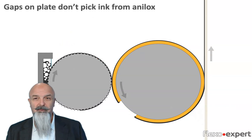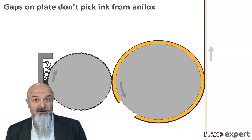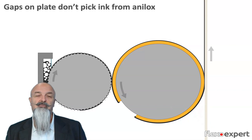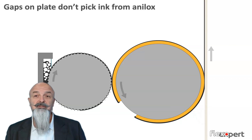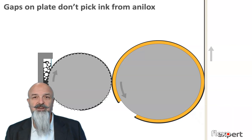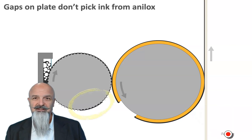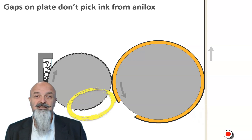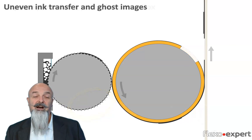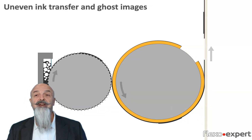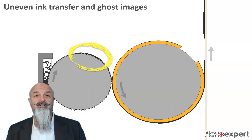Let's not forget that normally we are not printing full solids — we have both printing and non-printing areas on the plate. Therefore, in correspondence with a plate non-printing area, the anilox will not discharge any ink to the plate. So it will return inside the ink chamber with some cells that are still full, or almost full. Out of the metering blade, we could then have areas on the anilox roll with a different quantity of ink in the cells.